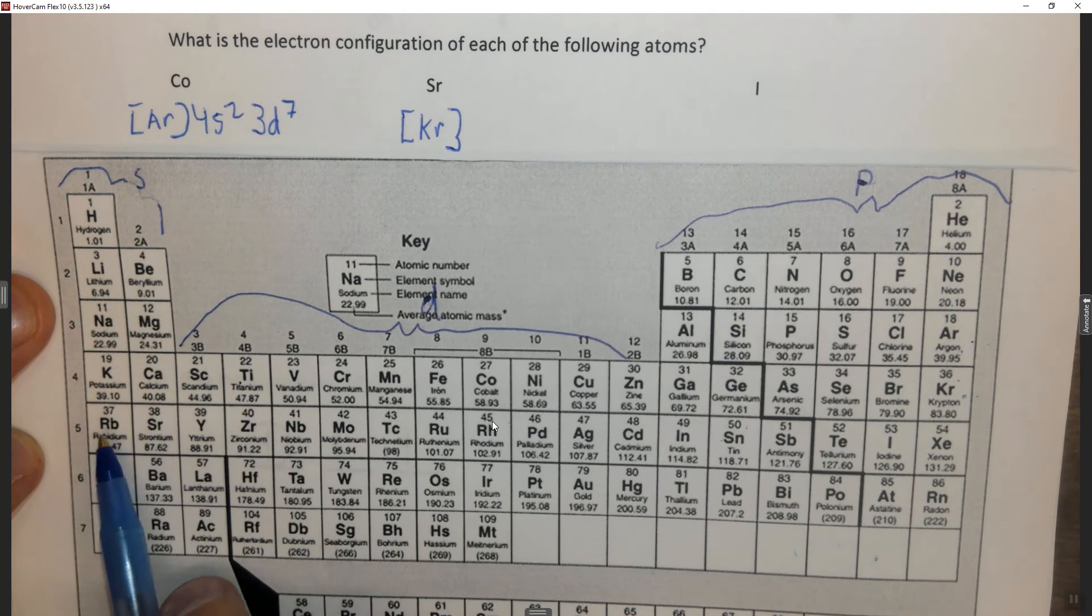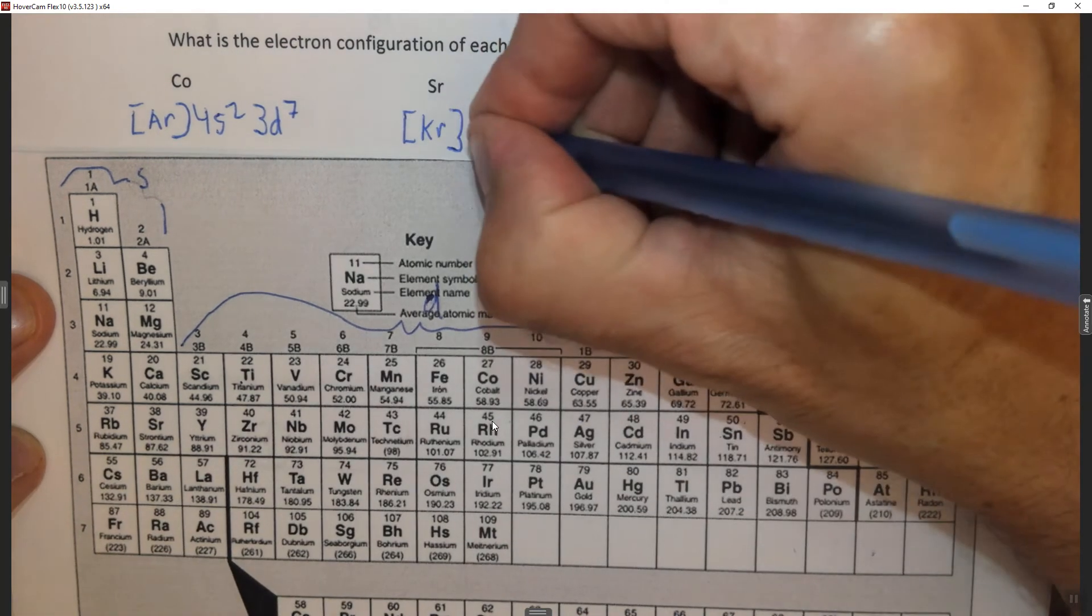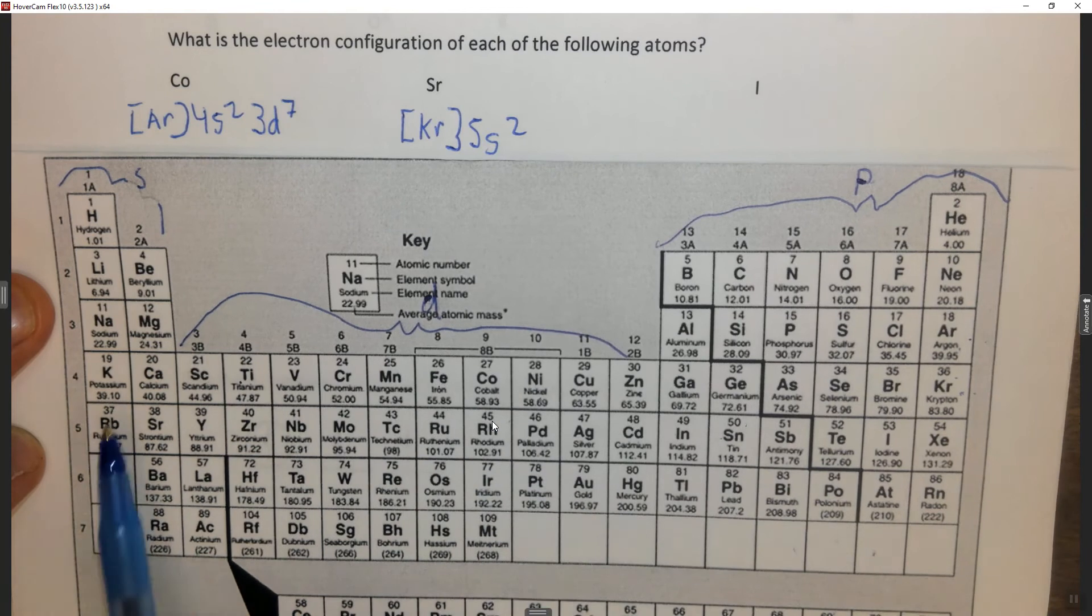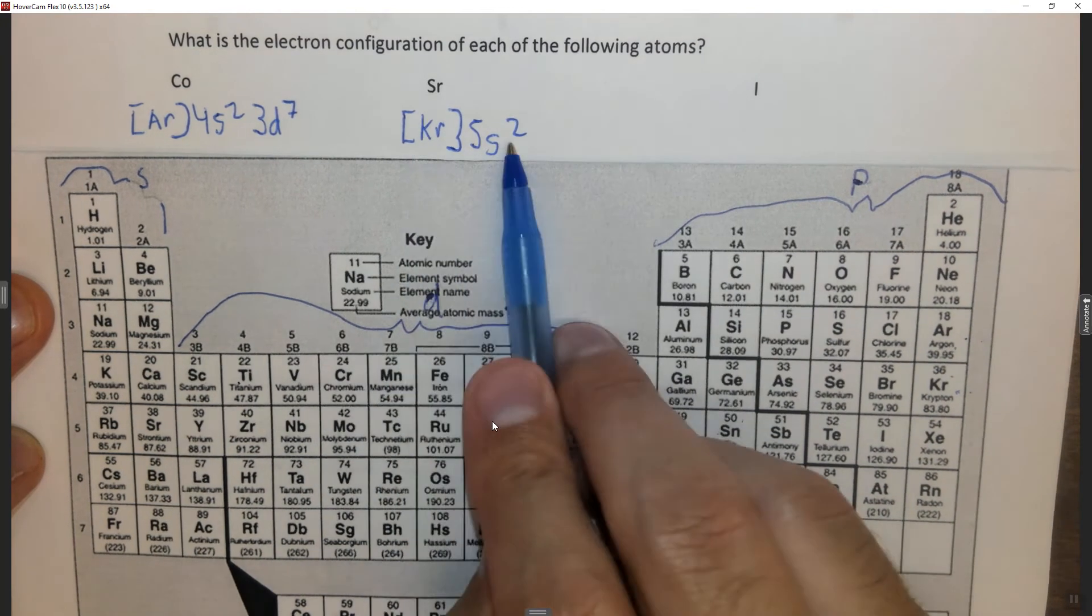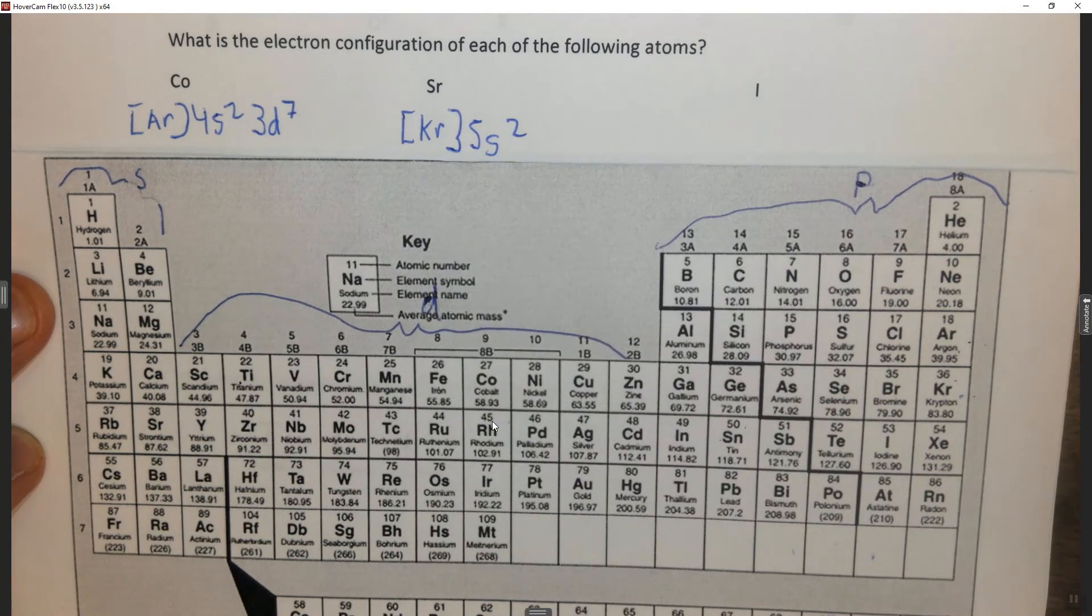Now we're in the 5s, and there are 1, 2, so 5s2. Krypton has 36 plus 2 more is 38, which is where strontium is, so you can check your work here.